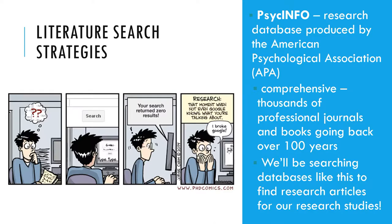Given that there are nearly four million records in PsycInfo, you may have to try a variety of search terms in different combinations and at different levels of specificity before you find what you're looking for. Imagine, for example, that you're interested in whether males and females differ in their ability to recall experiences from when they were very young. Entering 'memory' would return far too many records. The thesaurus helps — entering 'memory' in the thesaurus provides several specific index terms, one of which is 'early memories.' Combining 'early memories' with 'human sex differences' as a second search term returns fewer articles, many of which are highly relevant to the topic.